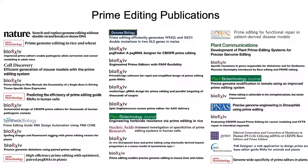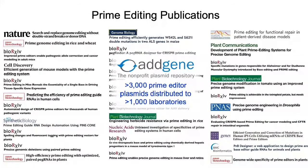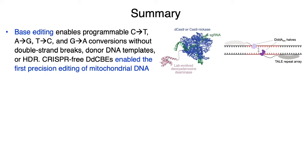Addgene has distributed our prime editor constructs to fulfill requests from more than 1,000 laboratories around the world. To summarize: base editing enables the four transition point mutations to be installed at targeted sites without double-strand breaks or donor DNA templates, and has been advanced to include CRISPR-free base editors that enable the first precision editing of mitochondrial DNA in living cells. Base editing coupled with in-vivo delivery systems such as AAV can correct animal models of human genetic diseases. A single injection of ABE-AAV into progeria mice rescued the disease at the DNA, RNA, protein, nuclear morphology, aortal histology, lifespan, and animal vitality levels.